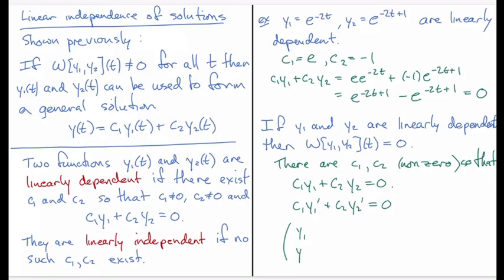And I can rewrite this in matrix form. [y1, y2; y1 prime, y2 prime] multiplied by [c1; c2] is equal to [0; 0]. That's just a different way of writing it.